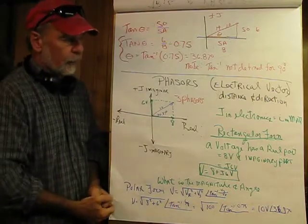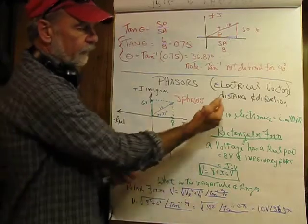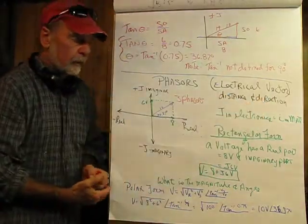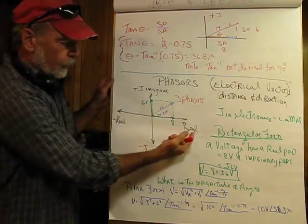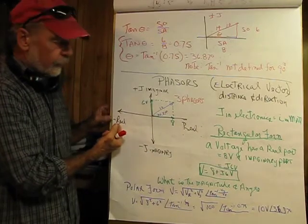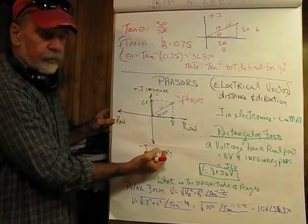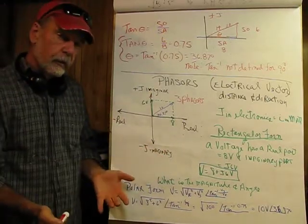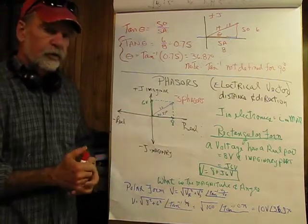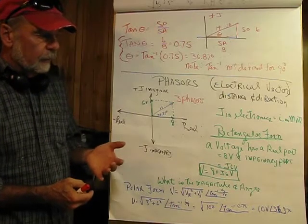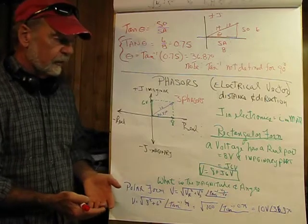Phasors are the electrical term for vectors, and what they have is distance and direction. In a phasor, our axes look like: a real axis, a negative real axis, a plus j imaginary, and a negative j imaginary. Now, imaginary sounds scary, but it isn't. In electronics we use plus j; in mathematics we use i. The reason we use j is because we use i for current, but it means exactly the same thing.